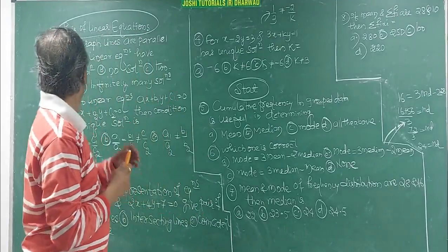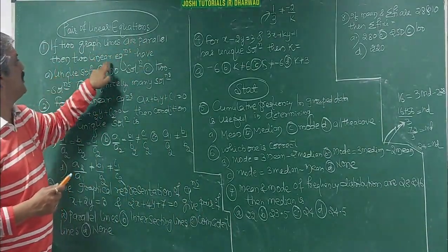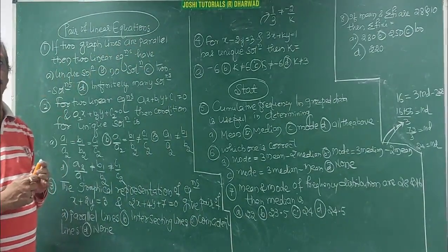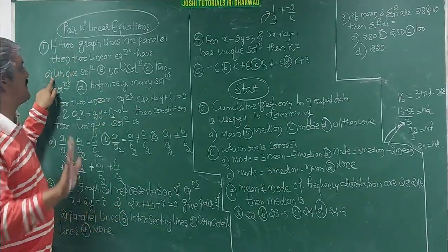Watch. If two graph lines are parallel, then two linear equations have. If they intersect, it is a unique solution. So A is not answer.